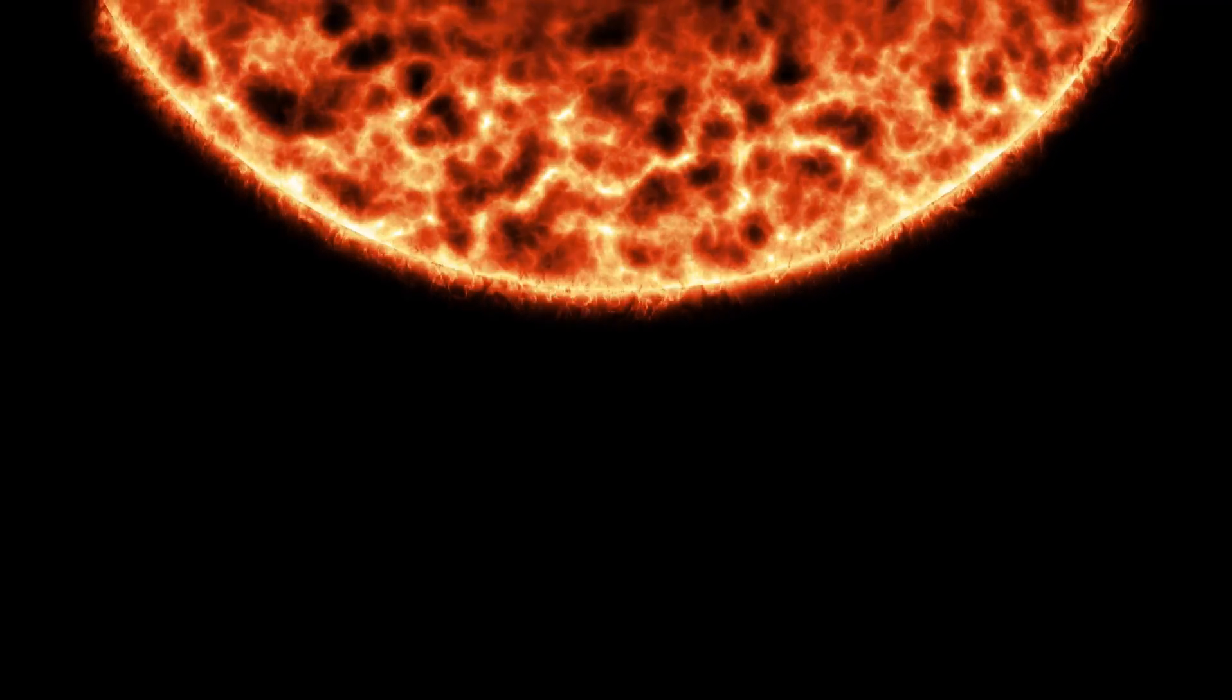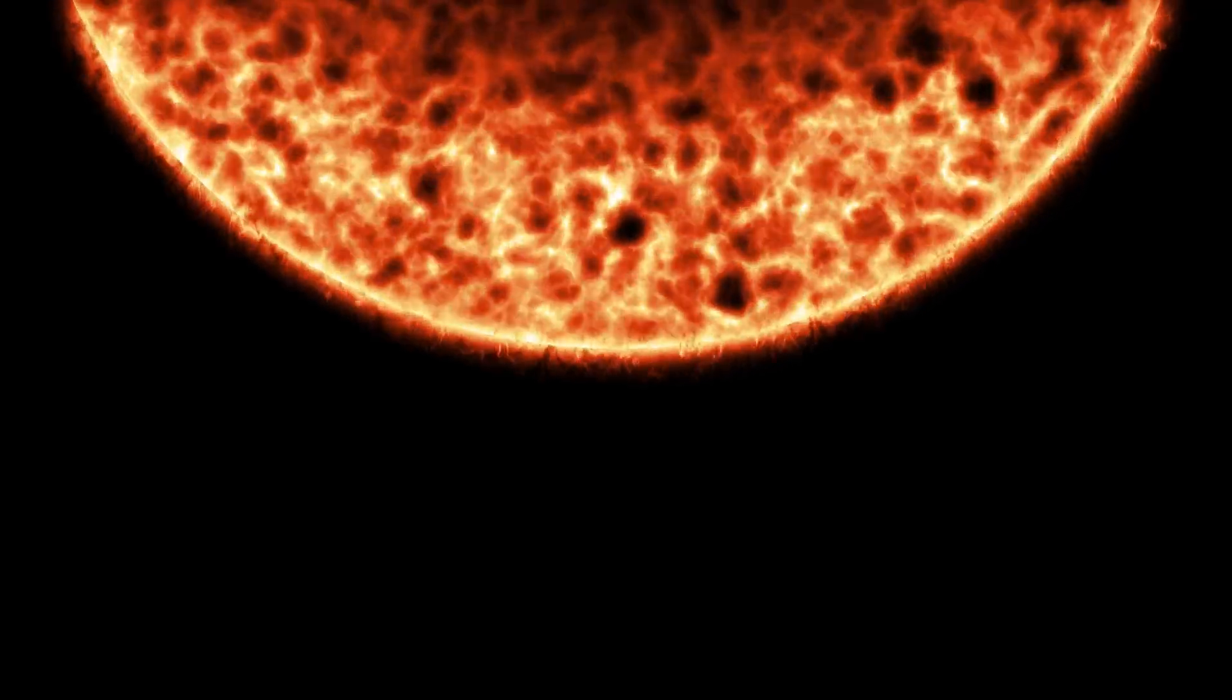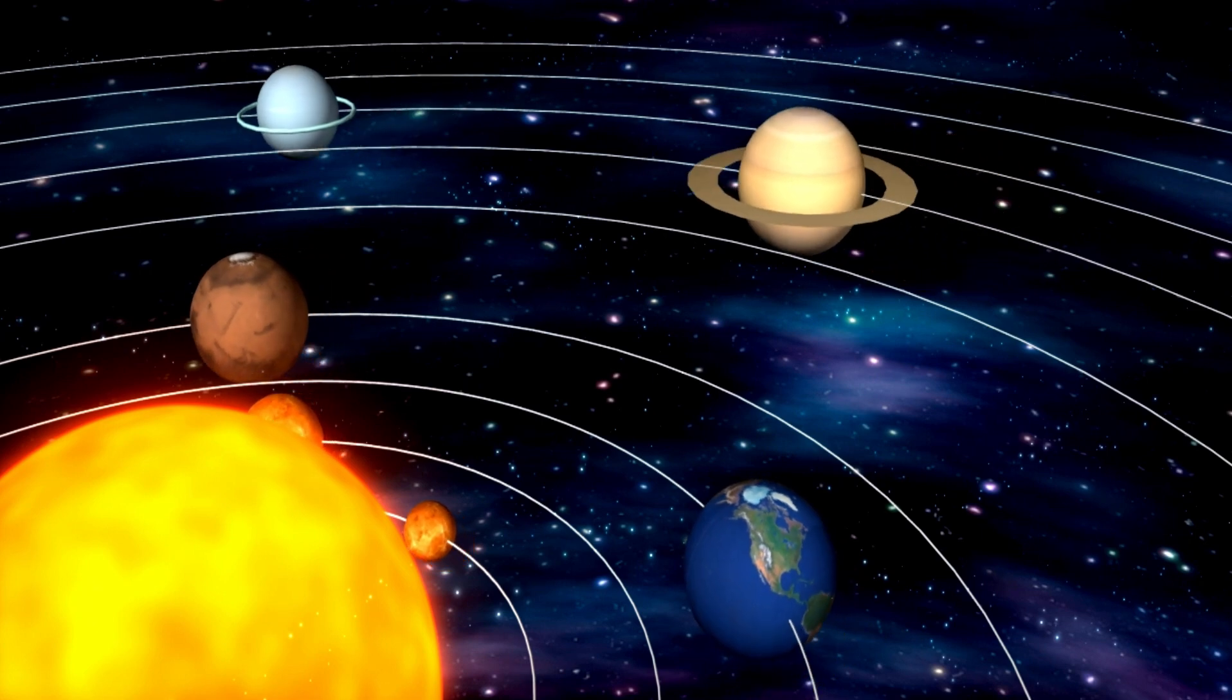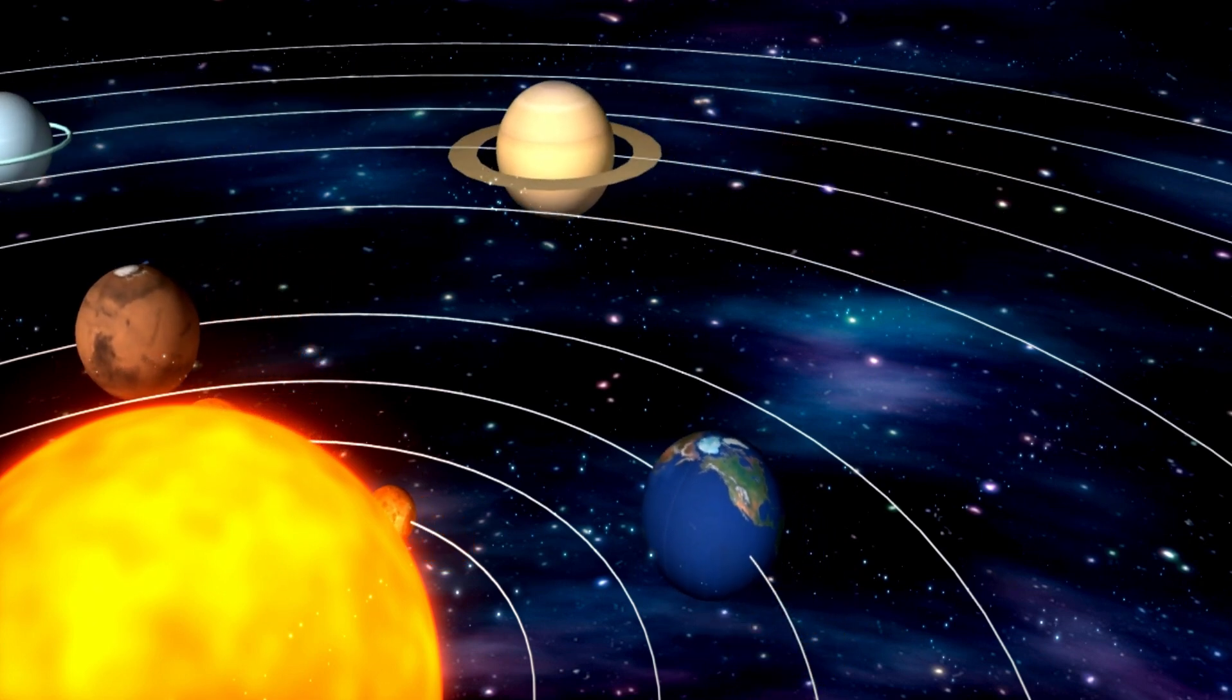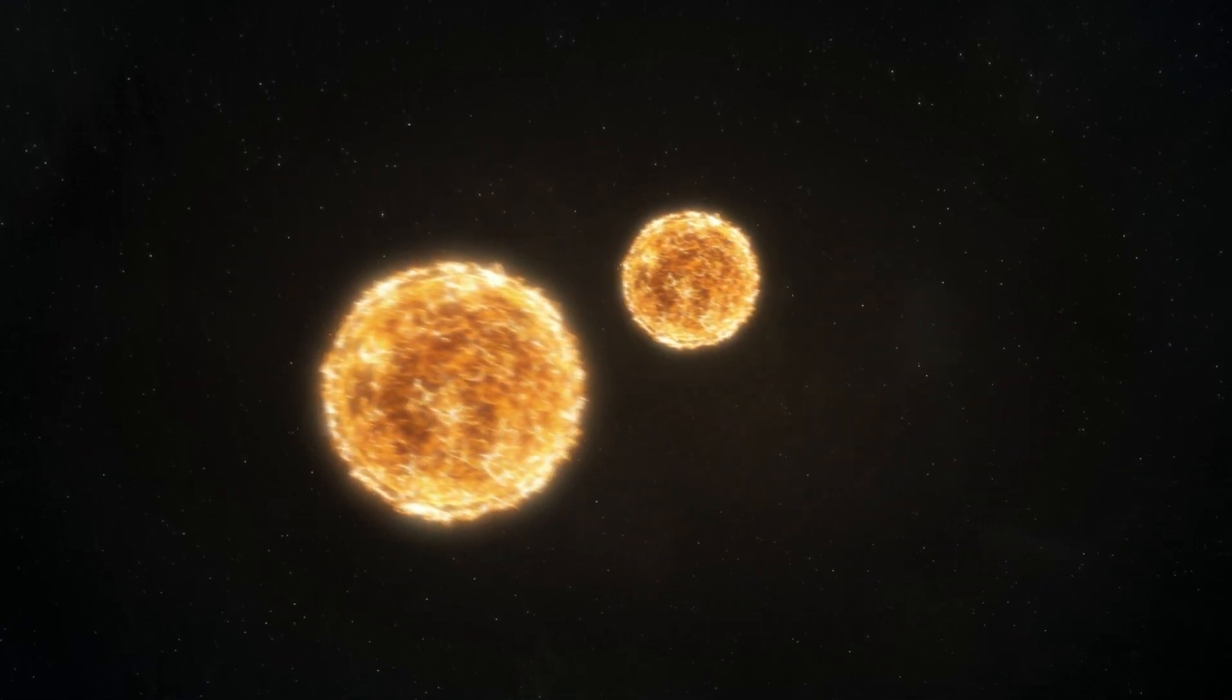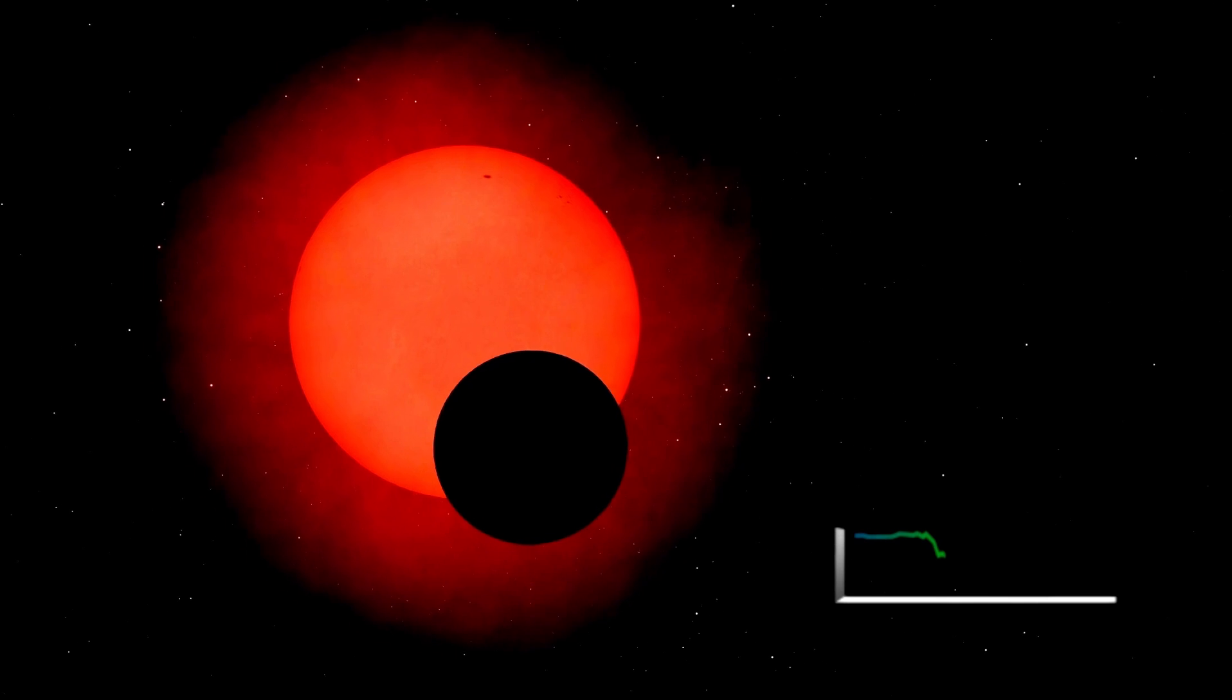To explain the difference, we're going to be using our Sun as the point of comparison because that's something we all know plenty about. While Betelgeuse, Antares, and Mu Cephei are all red supergiant stars, they each have their own unique properties and characteristics that set them apart from one another. One of the main differences between the three stars is their size.